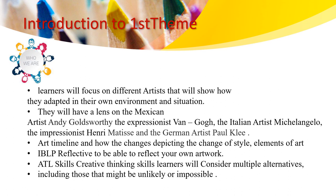We will be looking into different artists such as Andy, Van Gogh, Michelangelo, Henry, and Paul. You are going to use the IBLP Reflective to be able to reflect on your own artworks. We will also look into the chart timeline and how the changes of style and elements of art. You learners will also use the ATLs to consider multiple alternatives.